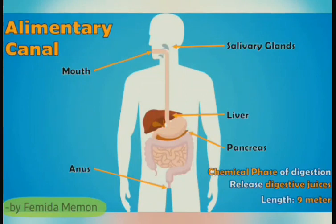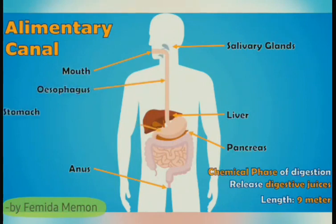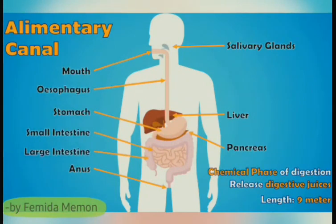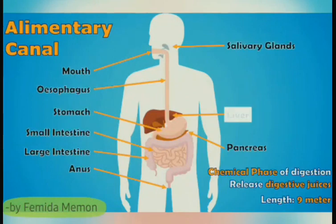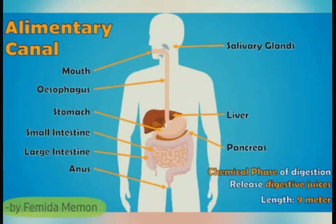The organs associated with the alimentary canal are: mouth, esophagus, stomach, small intestine, and large intestine. The glands associated with the alimentary canal are: salivary glands, liver, and pancreas.